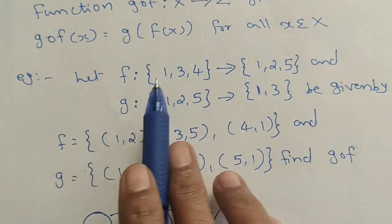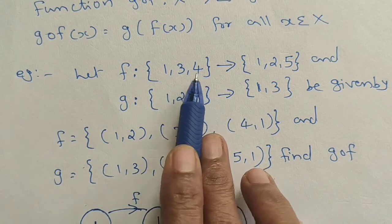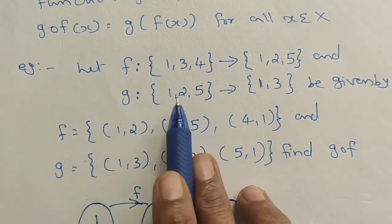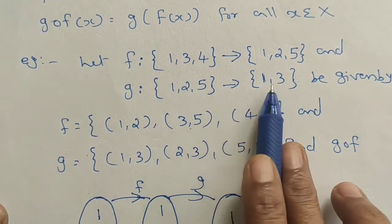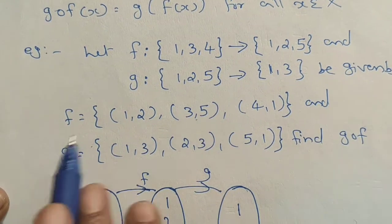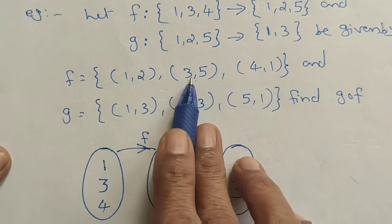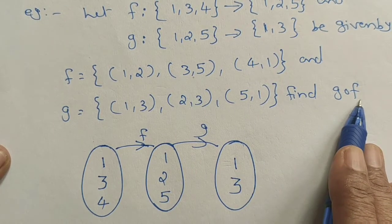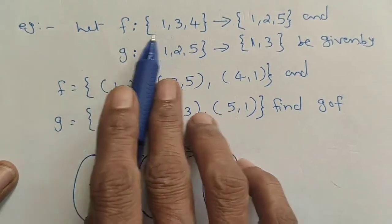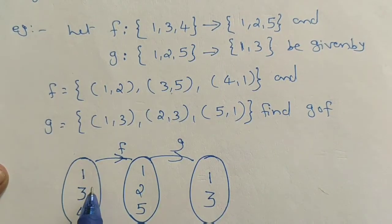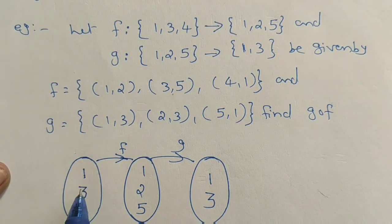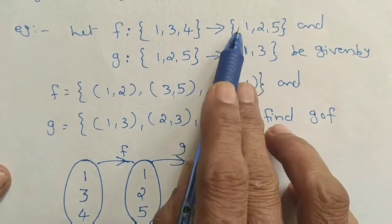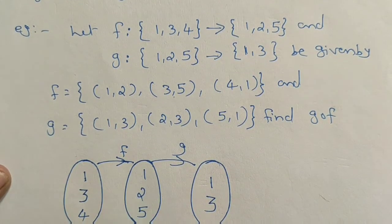Let f be defined from the set {1, 3, 4} to the set {1, 2, 5}. And let g be defined from the set {1, 2, 5} to the set {1, 3, 5}.